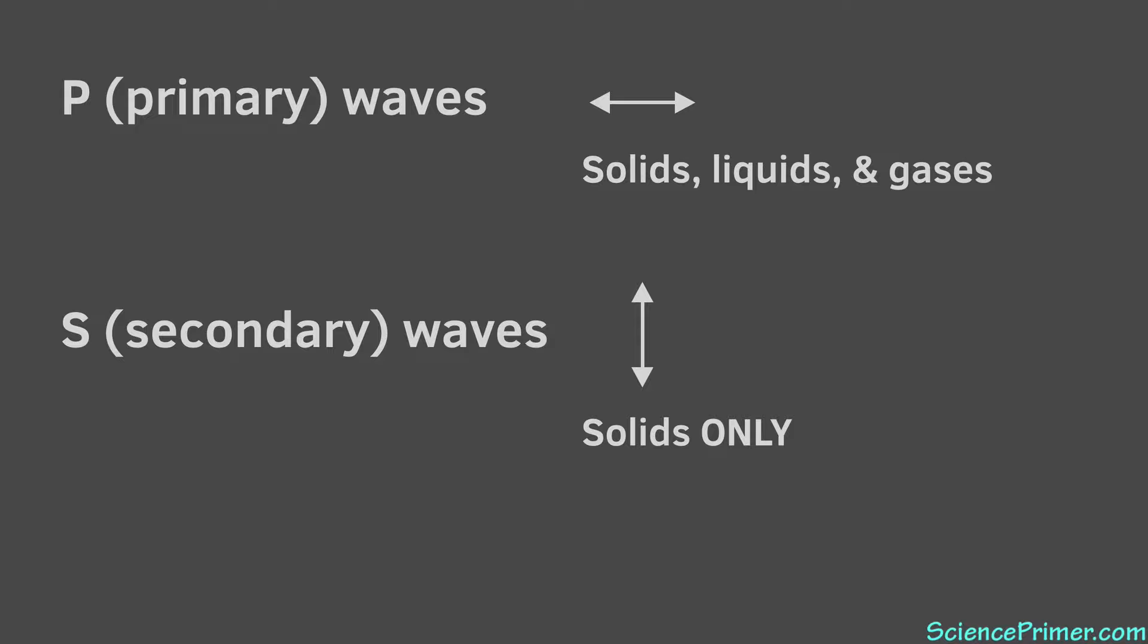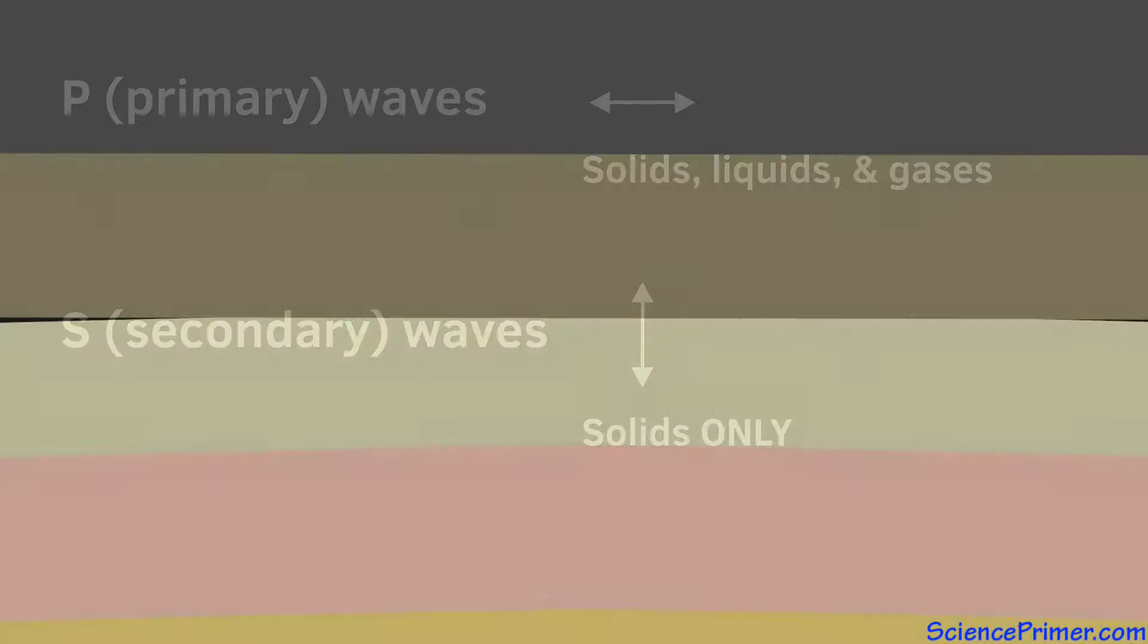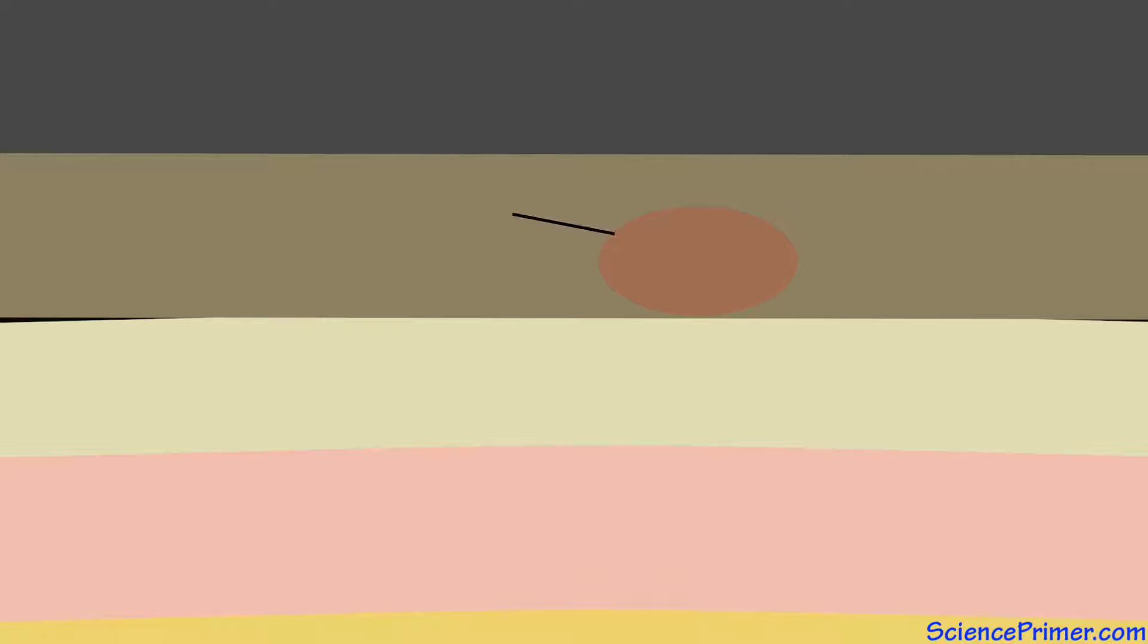Liquids and gases prevent the propagation of S waves. Hotter areas cause waves to travel more slowly, revealing the presence of hot spots. Partially molten areas, such as the Asthenosphere, weaken but do not completely stop S waves. Molten regions cause P waves to slow down and completely stop S waves.